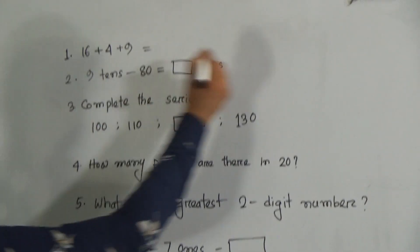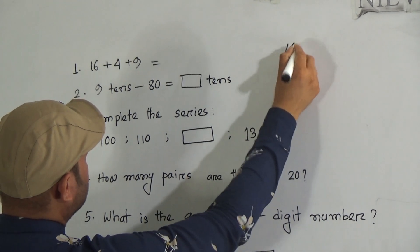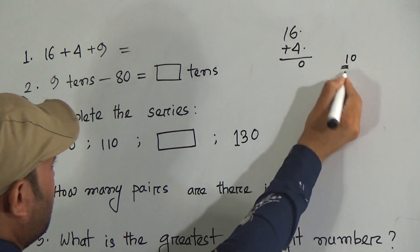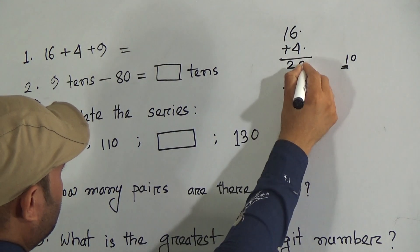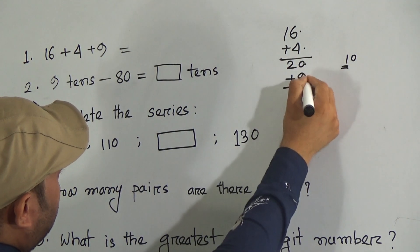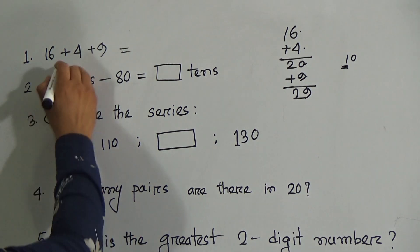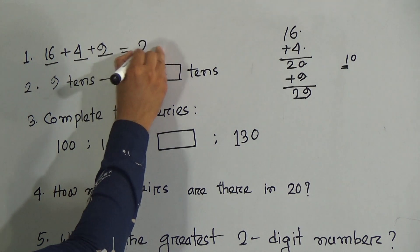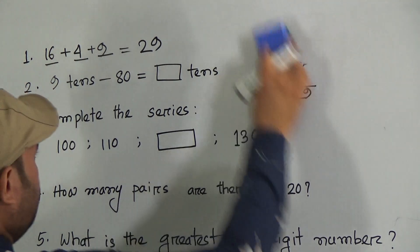Question number 1: 16 plus 4 plus 9. First of all, you have to add 16 plus 4. 6 plus 4 is 10, so here it will be 0 and you carry 1. 1 and 1 is 2, then add with 9. So 20 plus 9: 9 plus 0 is 9, and 2, so 16 plus 4 is 20, and 20 plus 9 is 29. Hope you understood this one.